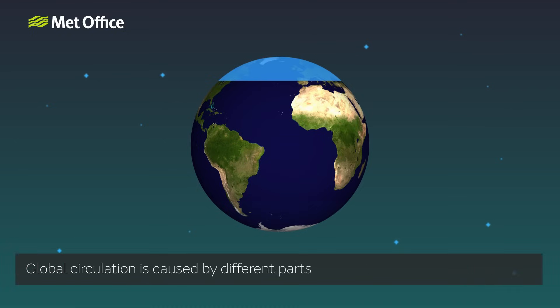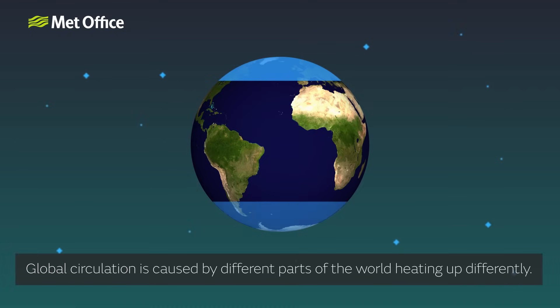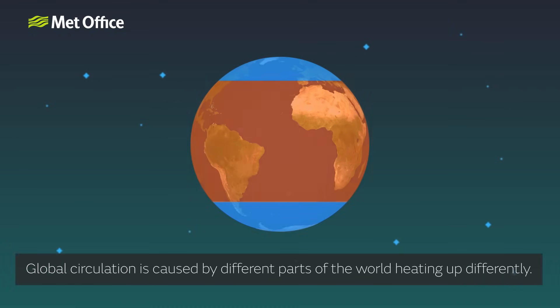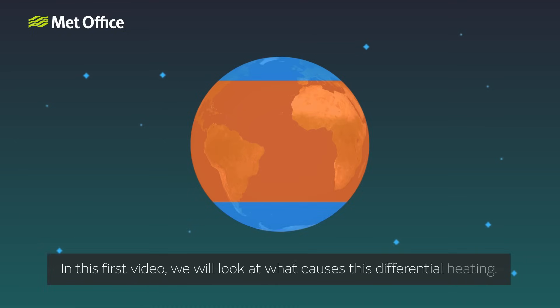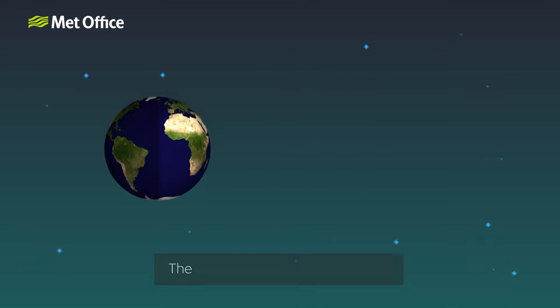Global circulation is caused by different parts of the world heating up differently. In this first video we will look at what causes this differential heating.